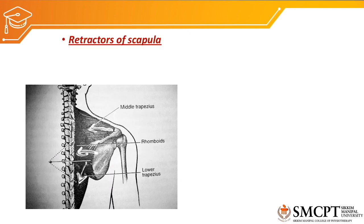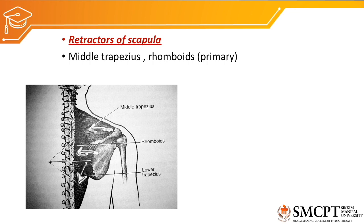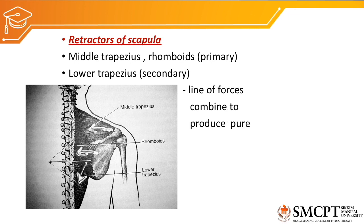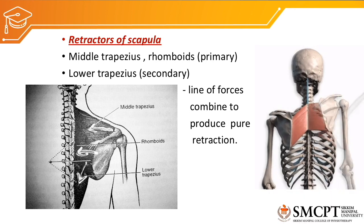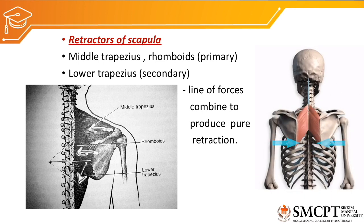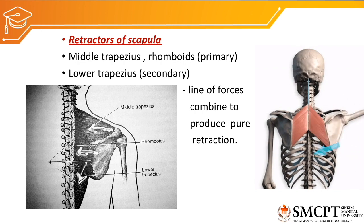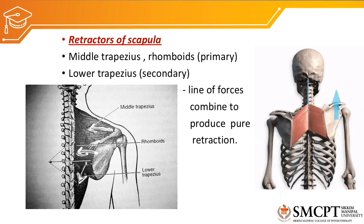Next are the retractors of the scapula. Retraction means the scapula moves closer to the spine. Retractors of the scapula are the middle trapezius, rhomboids major and minor, and lower trapezius. The action of all these muscles creates a line of force directed purely towards retraction of the scapula. This animation shows how the rhomboids function as an elevator, downward rotator, and retractor of the scapula.